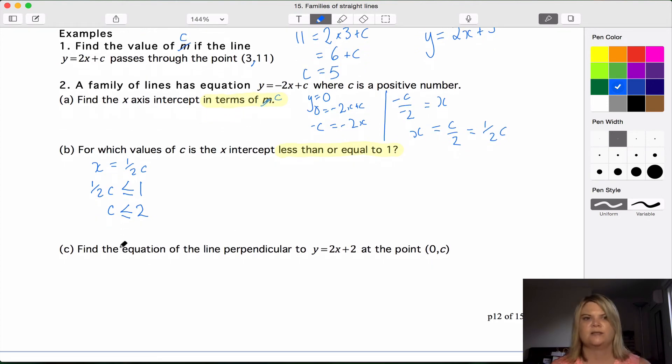Question C. Too many c's in this question overall. Find the equation of the line perpendicular to this line at this point. Our first gradient from here is 2. And we know the perpendicular line will be negative 1 over m1 which is 2.